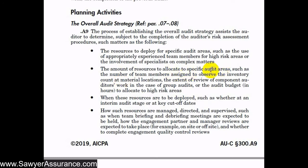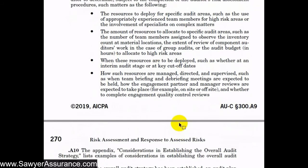We also want to determine the amount of resources to allocate to specific audit areas — for example, how many team members do we need to send to observe inventory at different locations, or do we need component auditors in place for group audits? That involves putting together the audit budget and allocating more hours to higher risk areas. We also need to determine the timing of when we perform our procedures — if we need interim procedures before year-end is closed, we need to schedule that. We need to understand the due dates of all our reports, determine when we need meetings and briefings, and schedule engagement quality control reviews, making sure everyone has time reserved on their schedules.